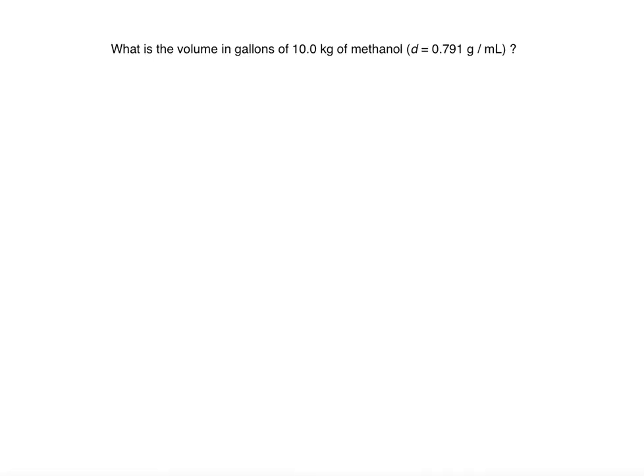What is the volume in gallons of 10 kilograms of methanol given that the density is 0.791 grams per milliliter? First, we're going to take 10.0 kilograms to be precise because we need three significant figures.